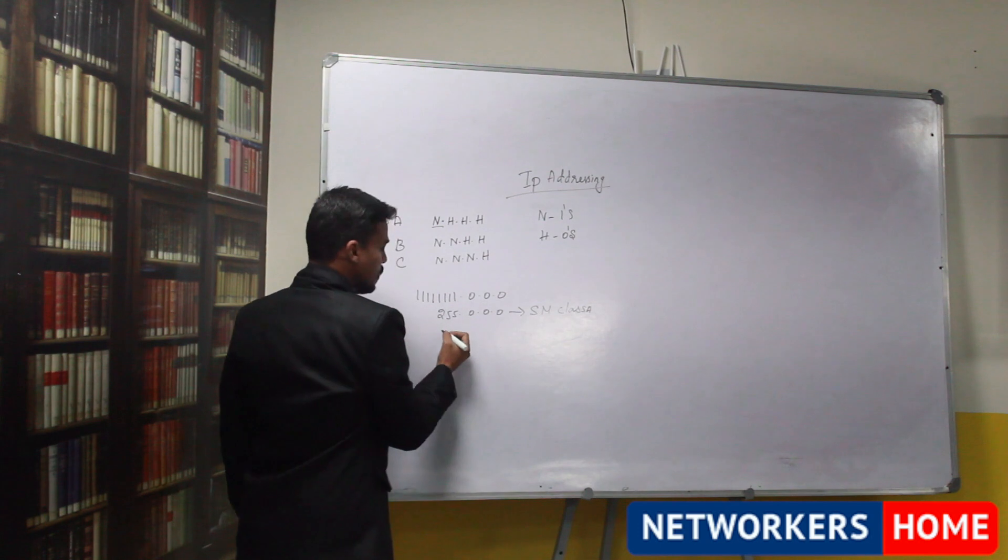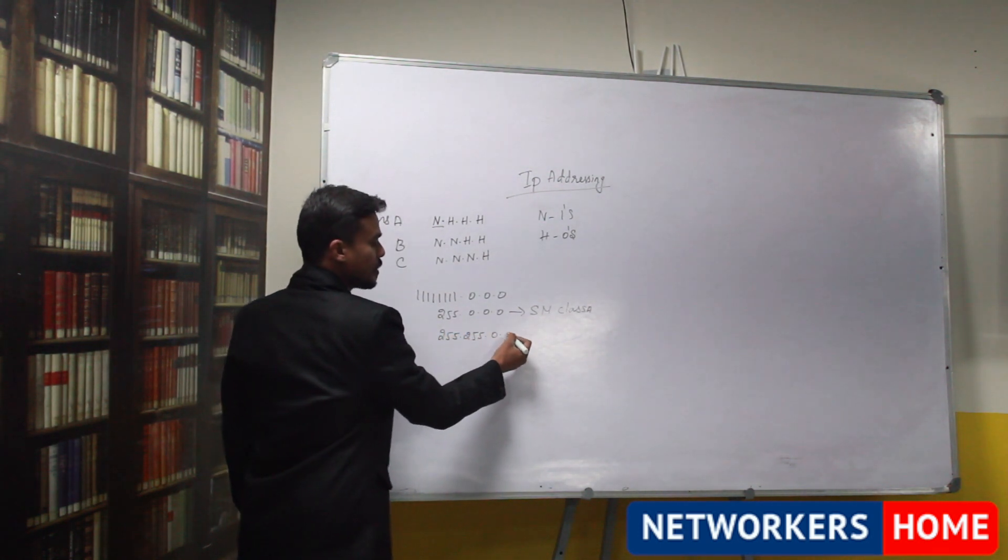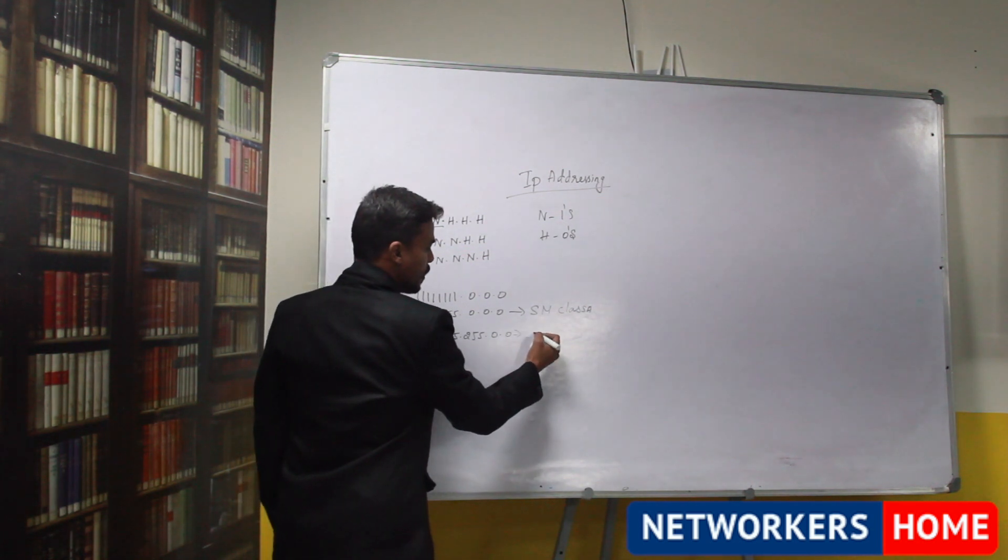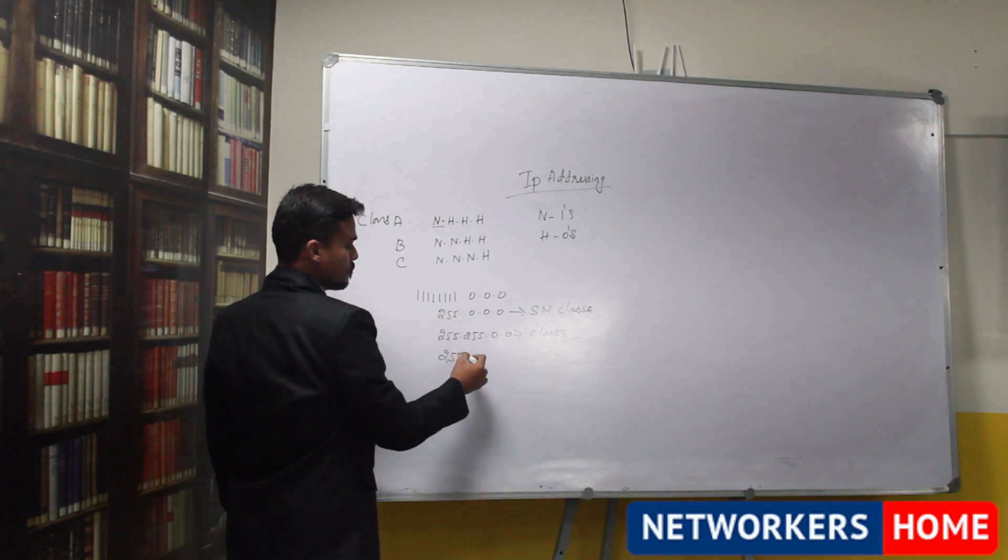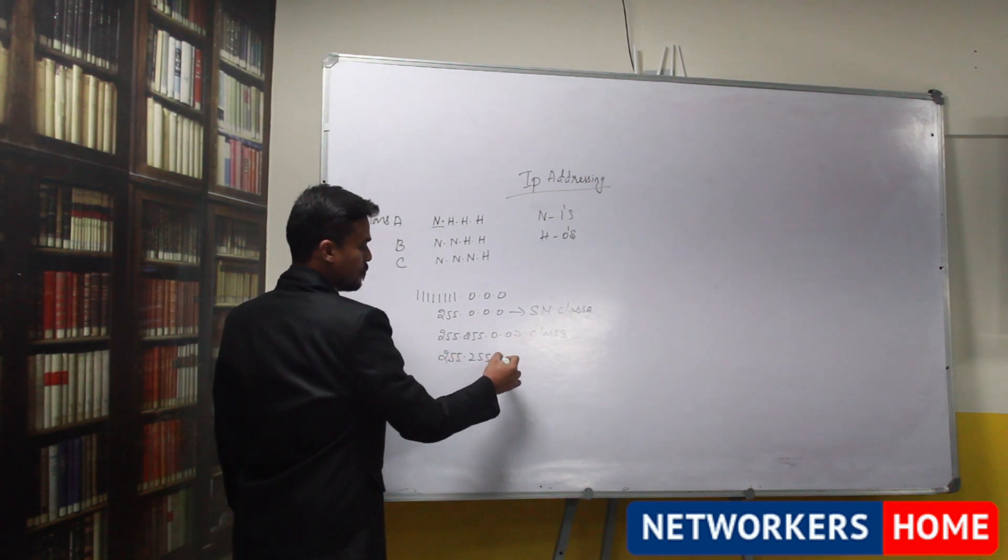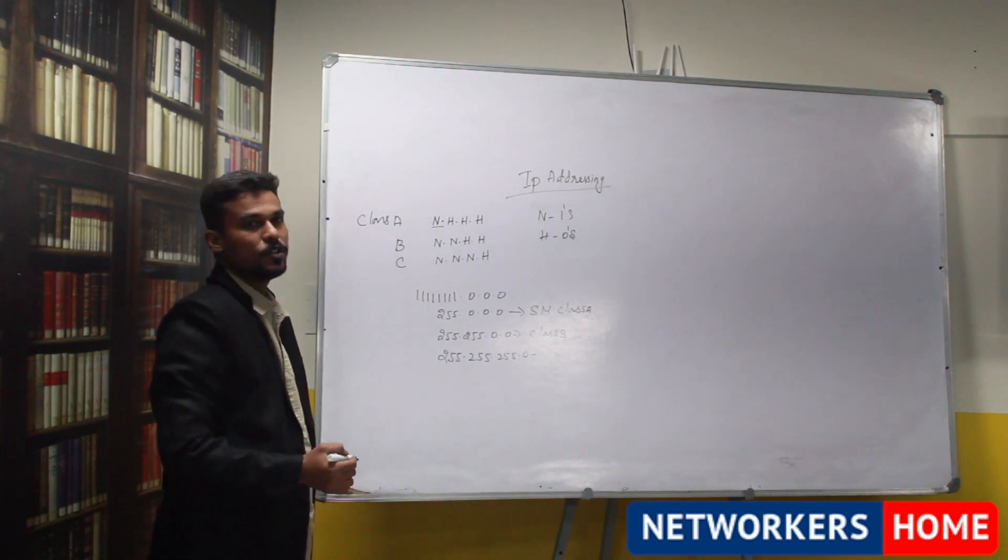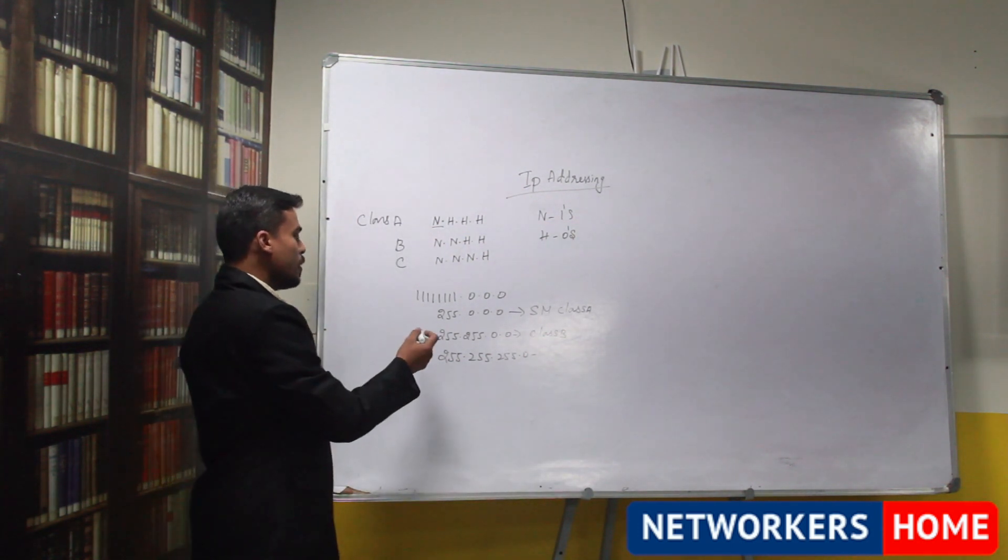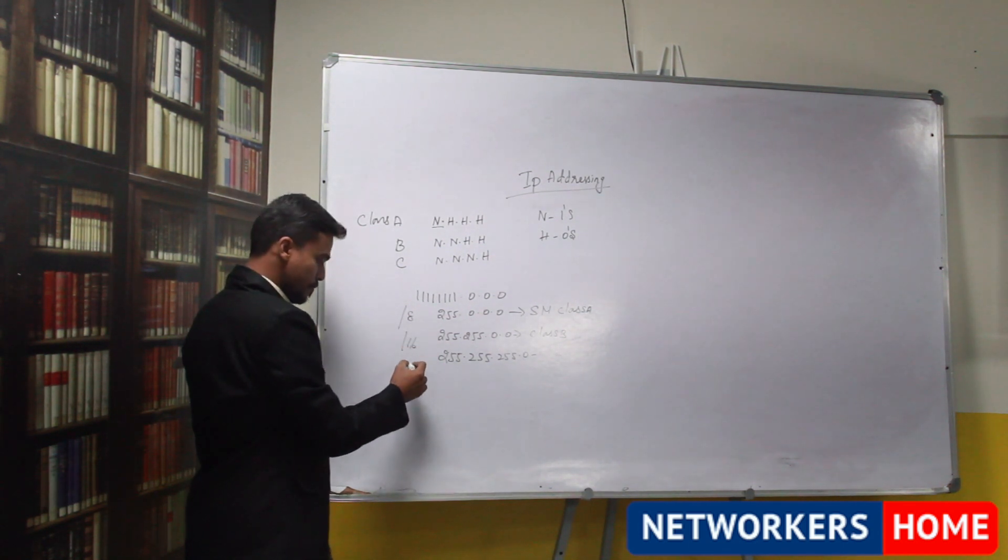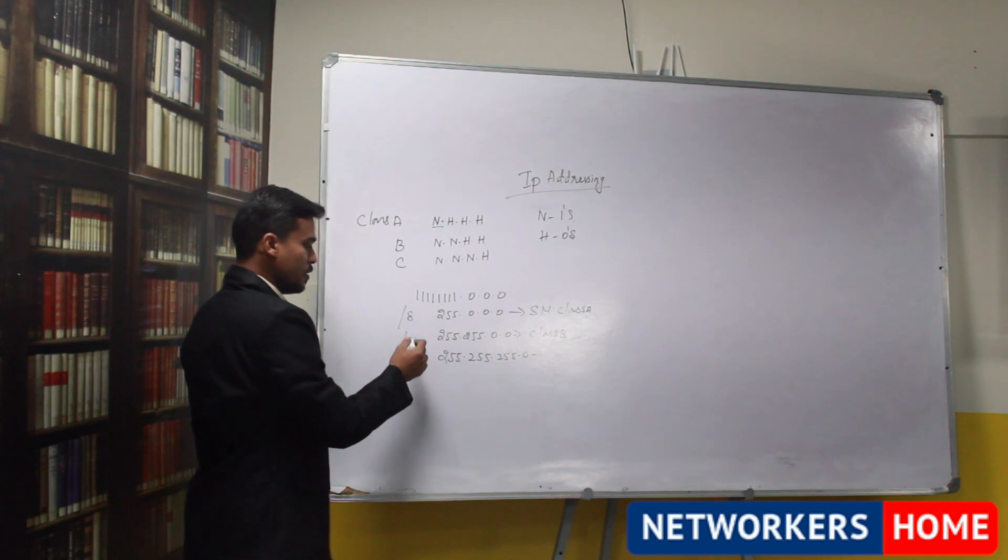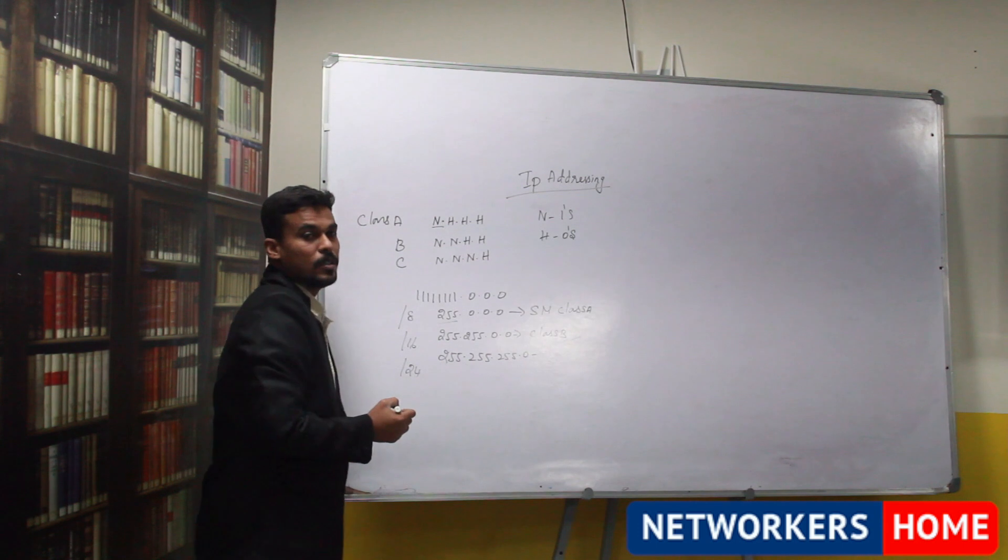Similarly for class B the subnet mask is 255.255.0.0, for class C it is 255.255.255.0. You can denote this value in terms of prefix like slash 8, 16 and 24. These values are called as prefix values as it denotes only the network bits.